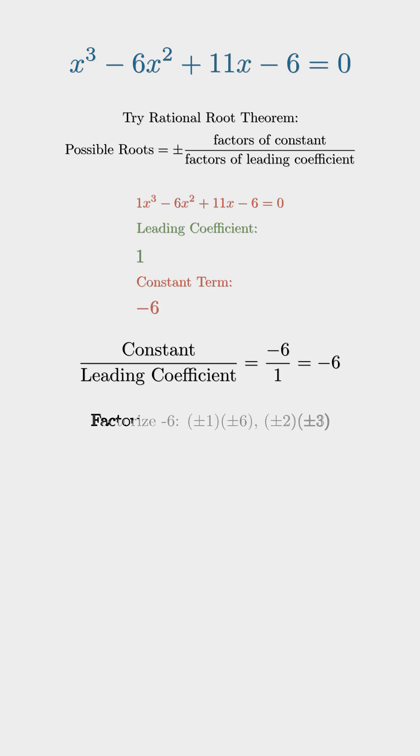Now we factorize -6. The factor pairs are plus or minus 1 and 6, or plus or minus 2 and 3.